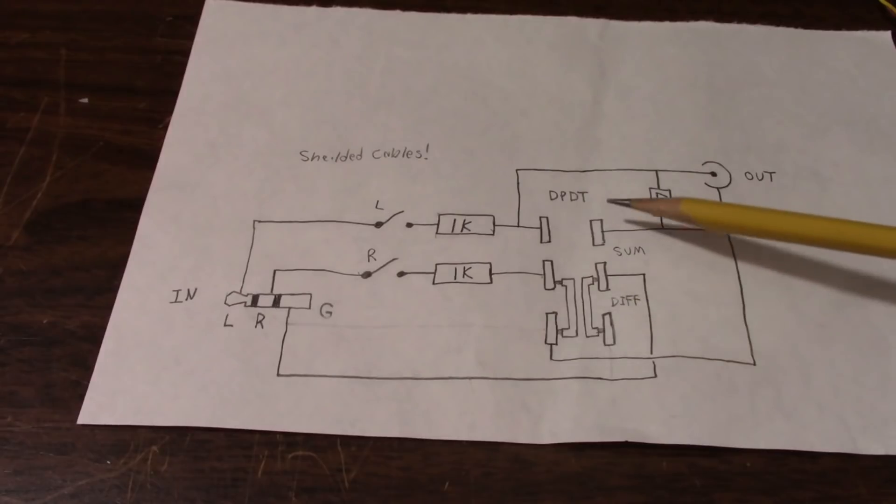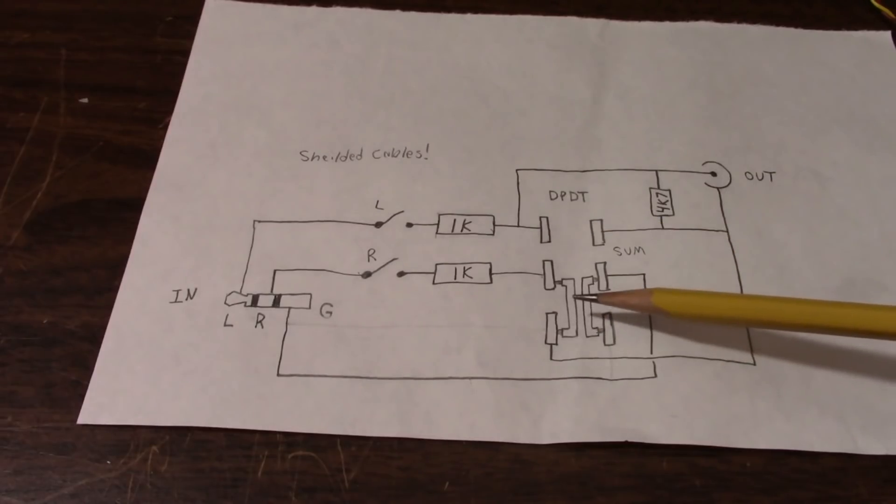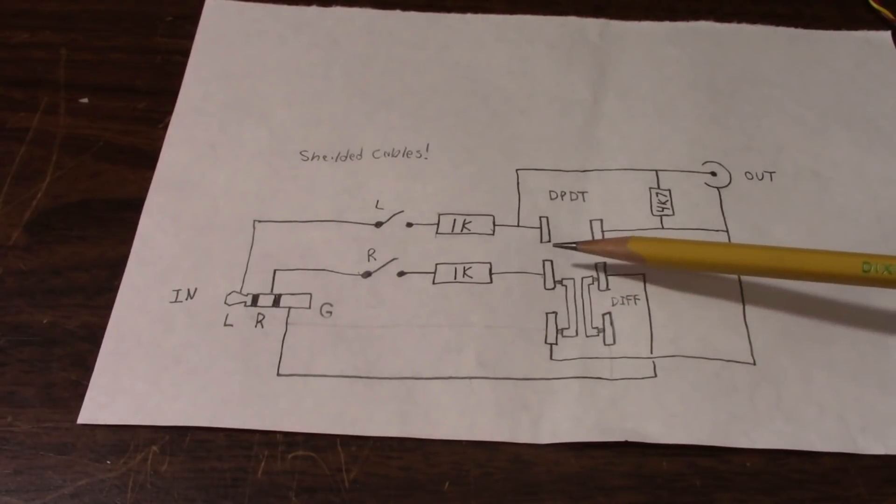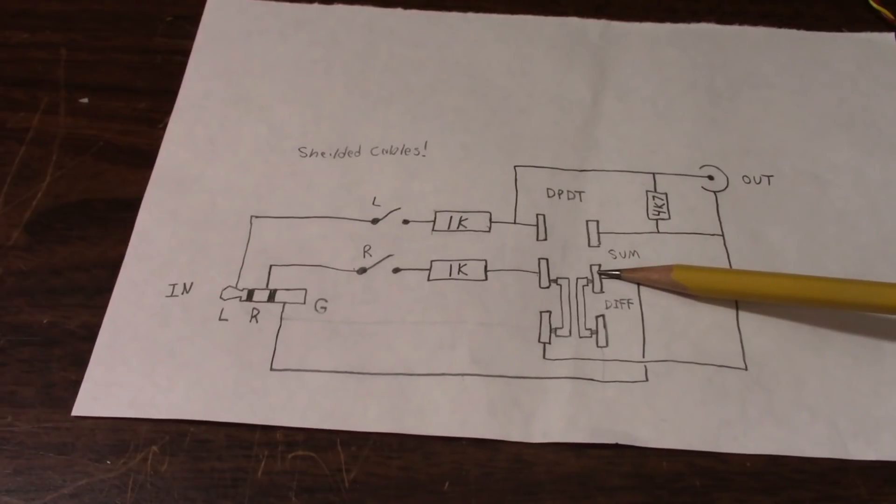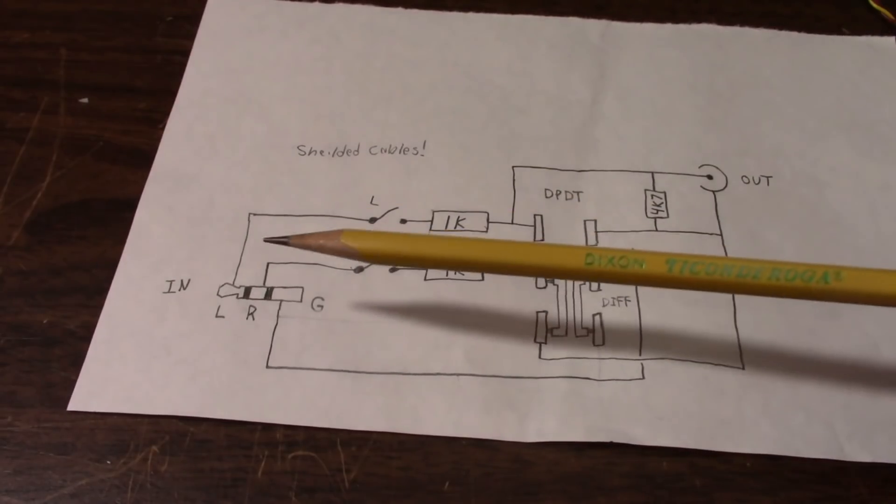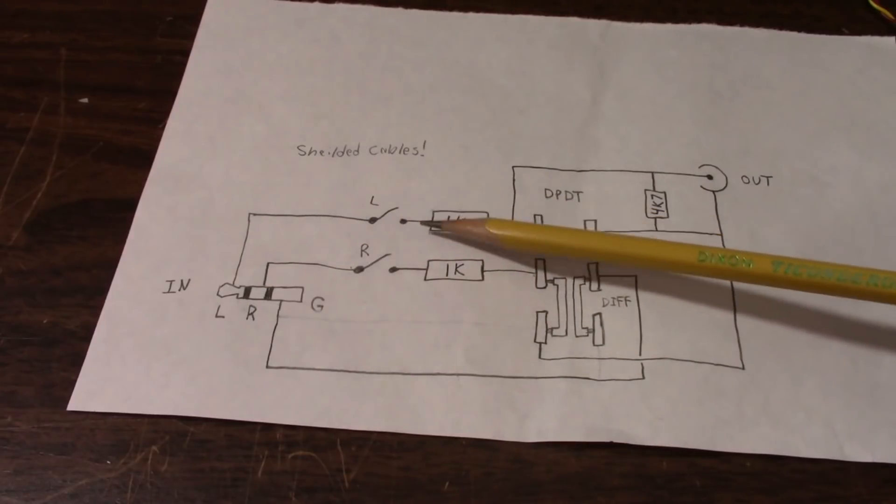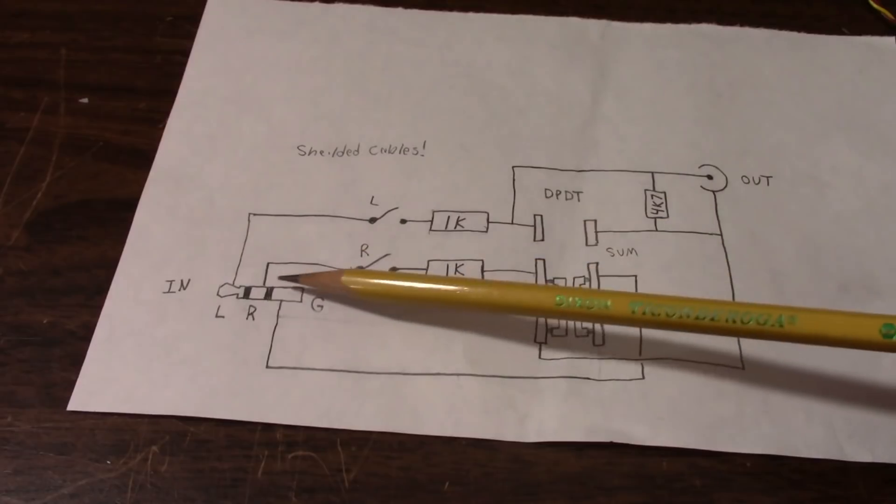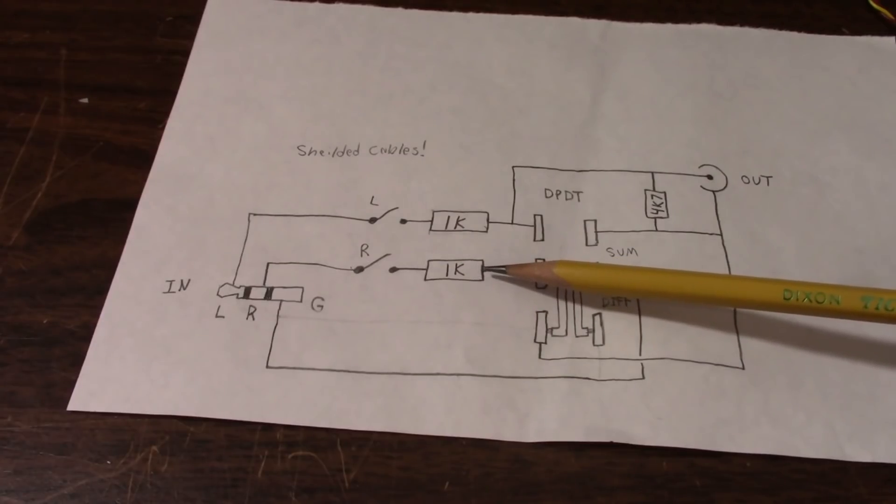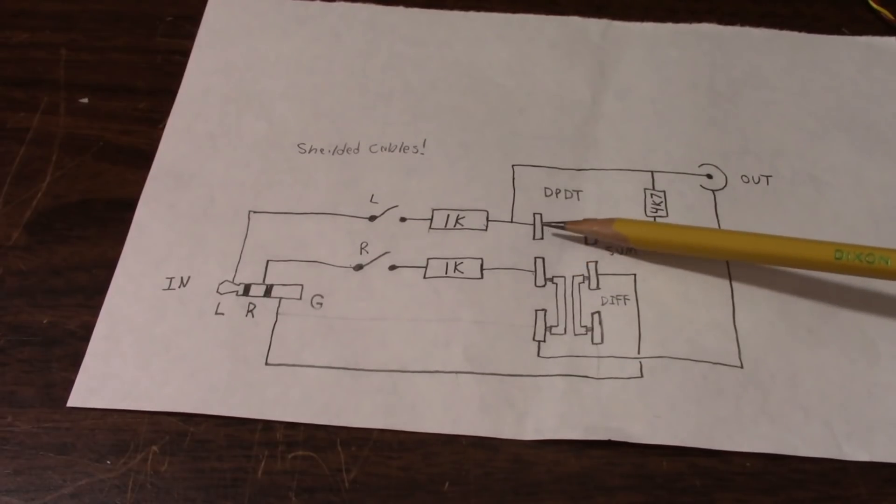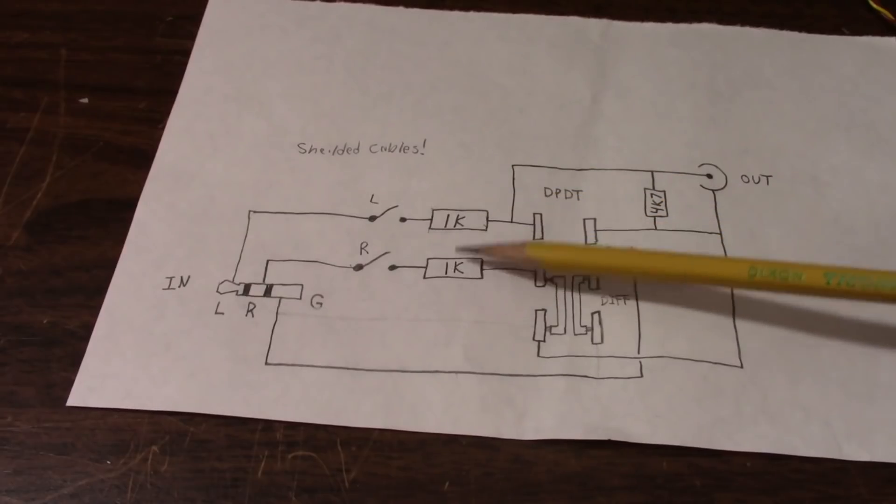So what you have here is a double pole double throw switch. These are the connection pins on the outside of the switch, and these are the internal contacts that slide back and forth. So shown in difference mode here, but in sum mode these contacts would be up in this position. So these two pins would be shorted together and these two pins on the other side would be shorted together. These would be left open. So our left signal comes in here, goes through the switch which of course would be closed, and it passes through a resistor. Also the right channel comes in through the switch, of course is closed, and passes through the resistor. Because these are shorted together it's mixing the two channels together. And that's why you have the resistors here.